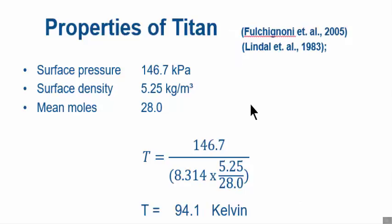Let's do Titan. Now Titan is the only moon with a thick atmosphere—it's one and a half times the density of Earth at surface or ground level. I've got these properties from these people here: surface pressure 146.7 kPa, density 5.25 kilograms per cubic meter, mean molecular weight 28. Stick those in: 94.1 Kelvin. Let me know how accurate that is for Titan. 94 Kelvin.